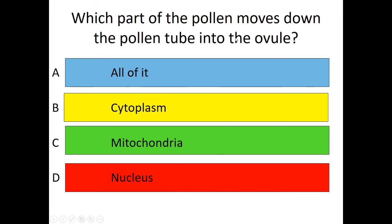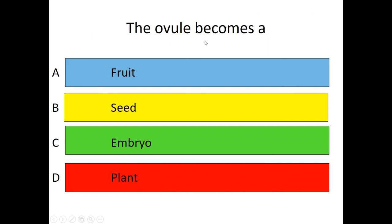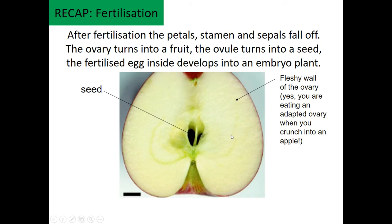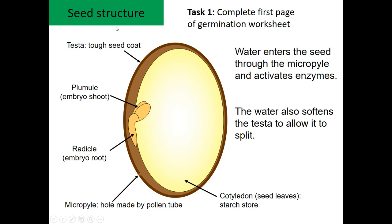Which part of the pollen moves down the pollen tube into the ovule? It's not all of it — it is only the nucleus, because that's where the DNA is kept. The ovule becomes the seed of the plant, and the ovary becomes the fruit of the plant. If you remember, seeds are in the middle — the ovule basically becomes the fruit, and that allows the seeds to be distributed around.